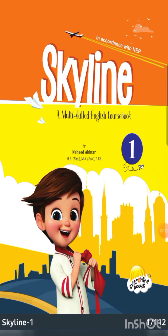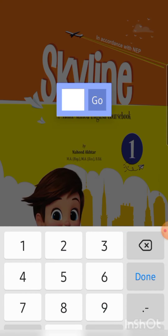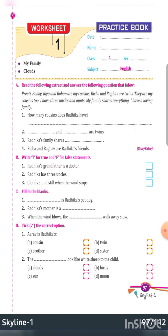Hello friends, so today we are taking our Skyline book, English Fast, and we are going to a worksheet on page number 97. Worksheet 1 and it will cover 'My Family' and 'Clouds'. So, in the practice book, first of all you will mention the date, name, and class. Class and subject are already given. Let's start the worksheet.